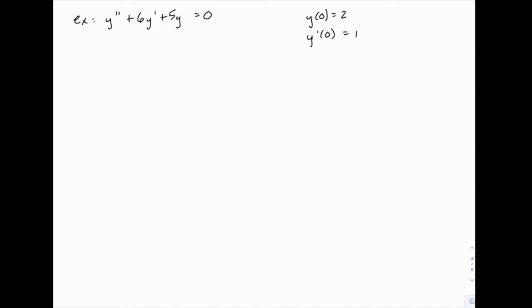We're going to start the same way we always have by writing the characteristic equation for this differential equation: r squared plus 6r plus 5 equals 0. If we can factor we'll do that, otherwise we'll use the quadratic formula, but this one factors pretty easily: r plus 5 times r plus 1 equals 0.